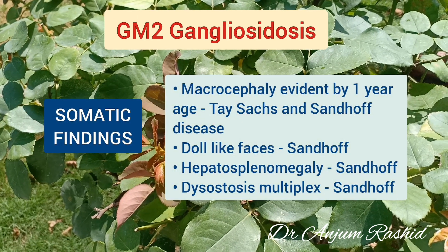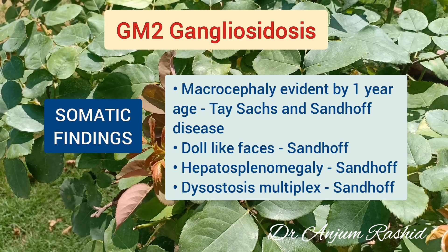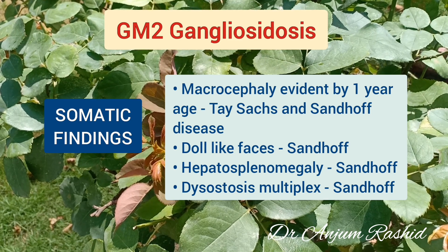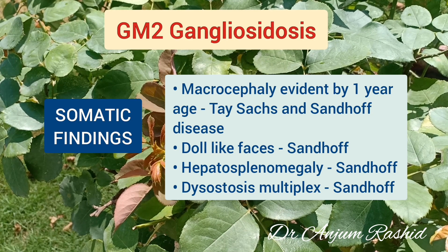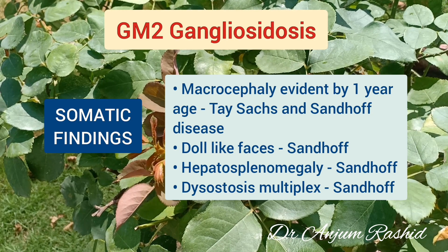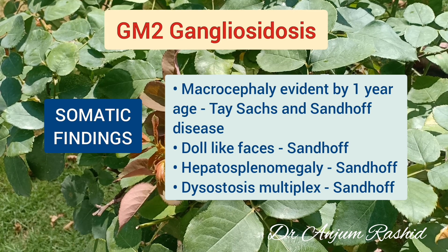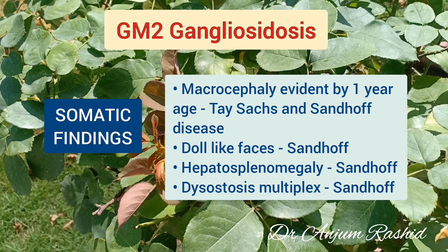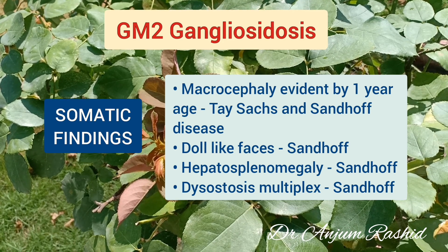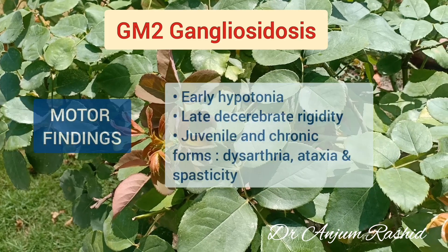Regarding somatic findings: macrocephaly is evident by 1 year of age in Tay-Sachs disease and Sandhoff disease. In addition, Sandhoff disease patients have doll-like faces and hepatosplenomegaly. They may sometimes have skeletal abnormalities, known as dysostosis multiplex.